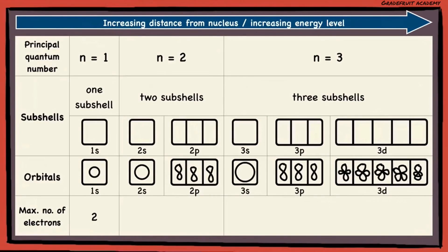Whereas for the second quantum shell, the maximum is 2 plus 6, which is 8. And for the third one, it is 2 plus 6 plus 10, which will give you 18.